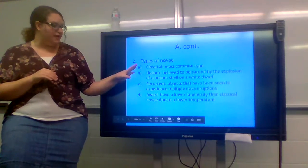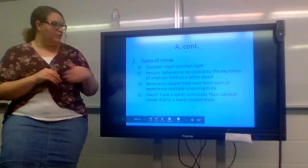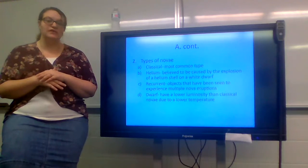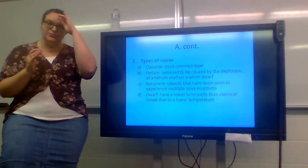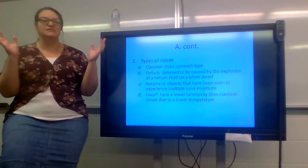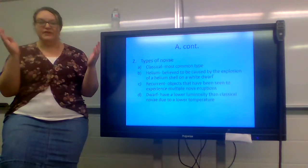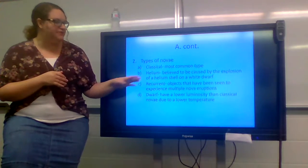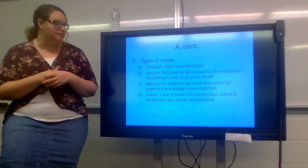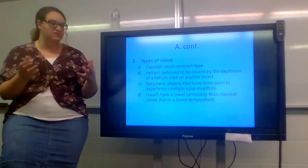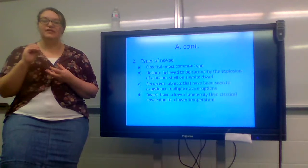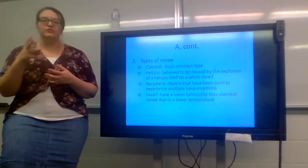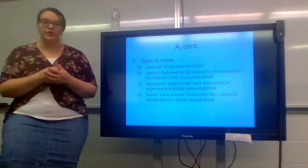Types of novae. You have four types here. Number one, or letter A in your notes, is classical. It's the most common type. These are the ones that do exactly what they're supposed to do according to a textbook. They flare up for a couple months, they fade, and they can flare up again throughout their lifetime. A helium nova. This is believed to be caused by the explosion of a helium shell on a white dwarf star. A white dwarf star, actually part of it explodes. And that explosion creates the nova for a temporary part of time.